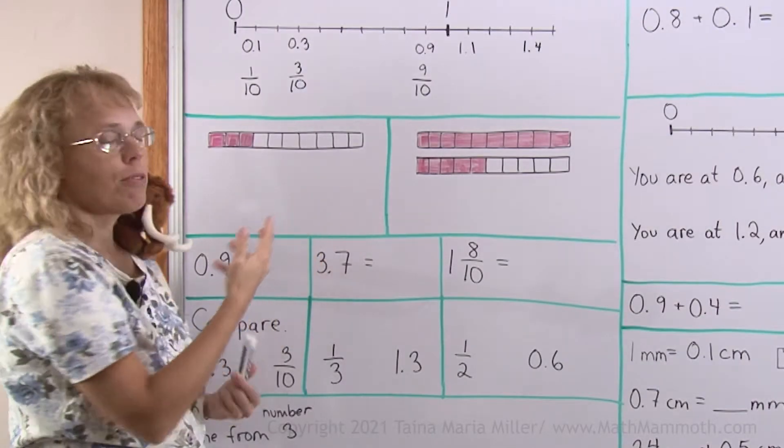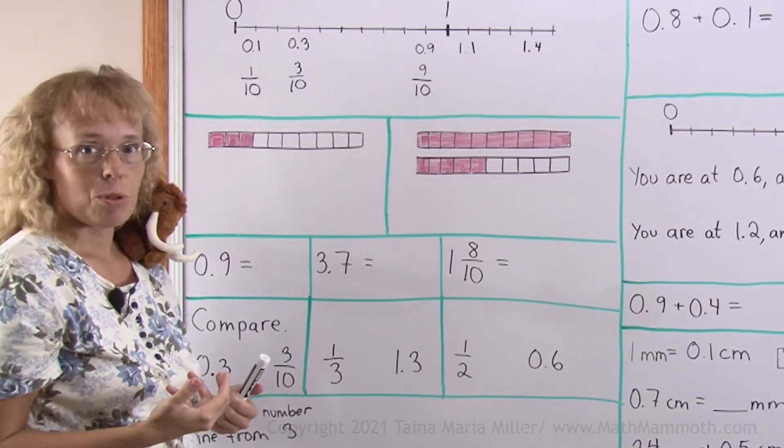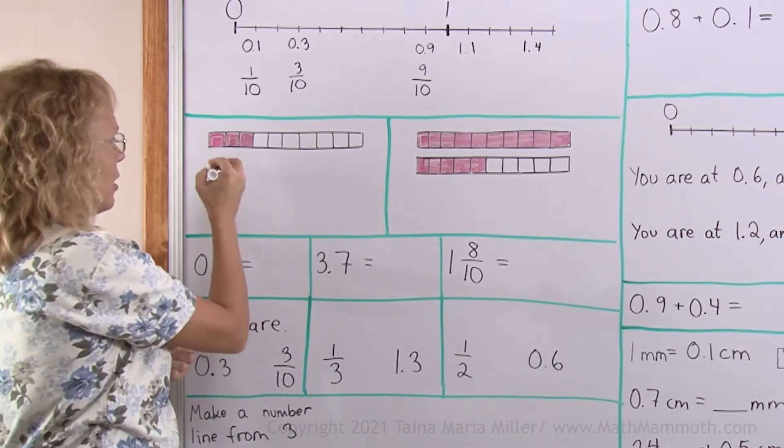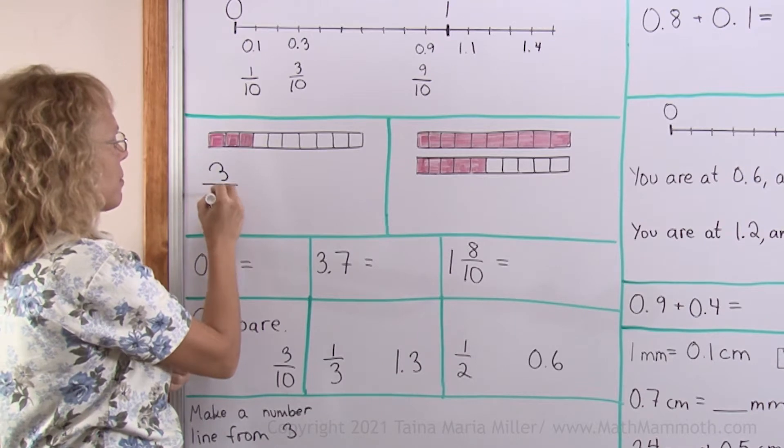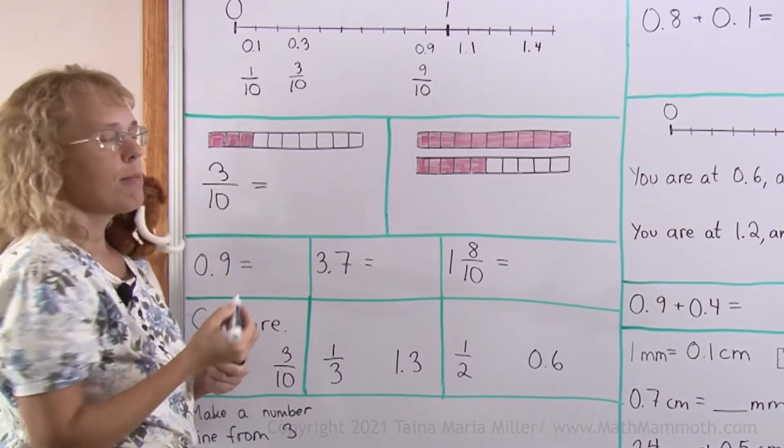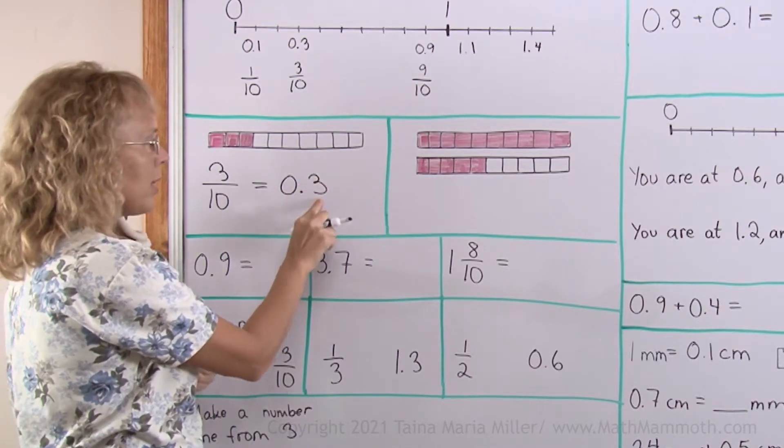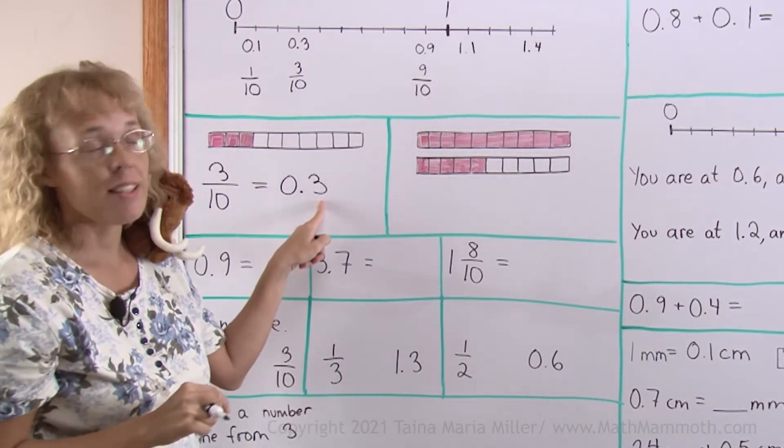Here I have a model for fractions. Let's write it as a fraction and as a decimal both. Because it has 10 parts and 3 are colored, as a fraction I have 3/10. I'll write the same as a decimal too, so I will have 0.3. This is telling you how many tenths there are.